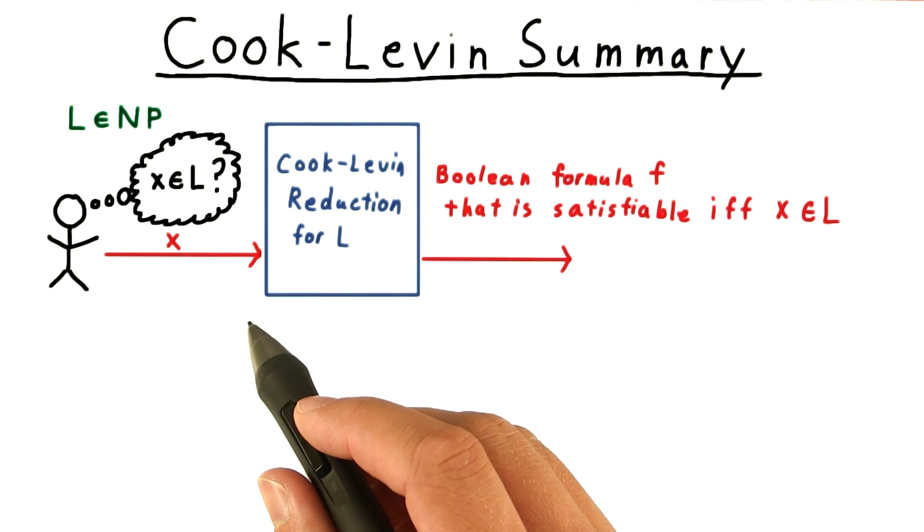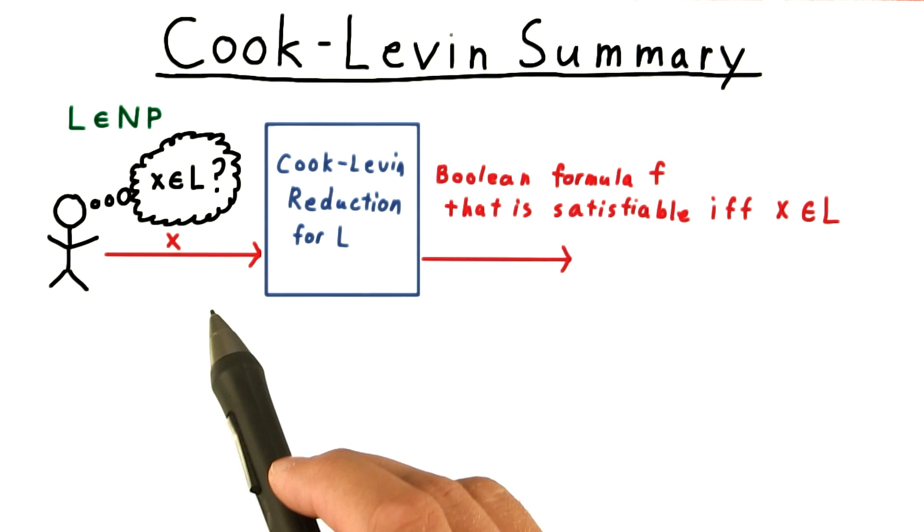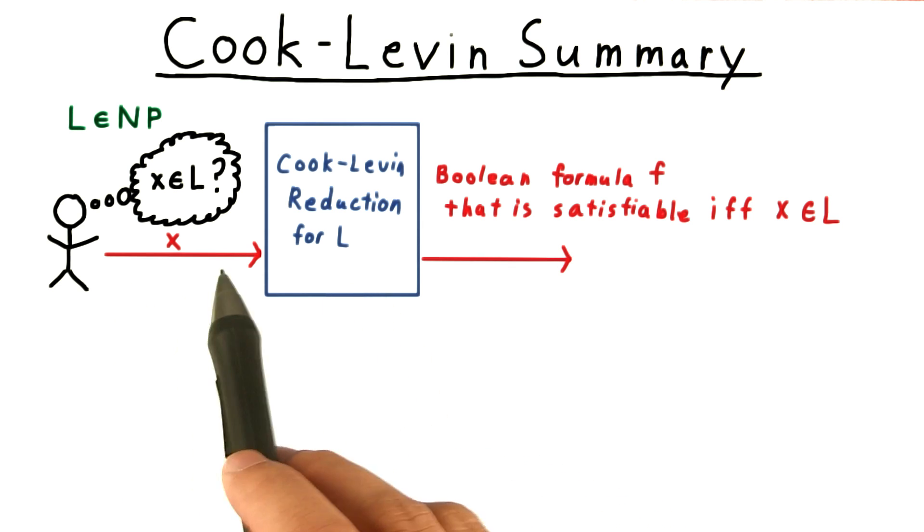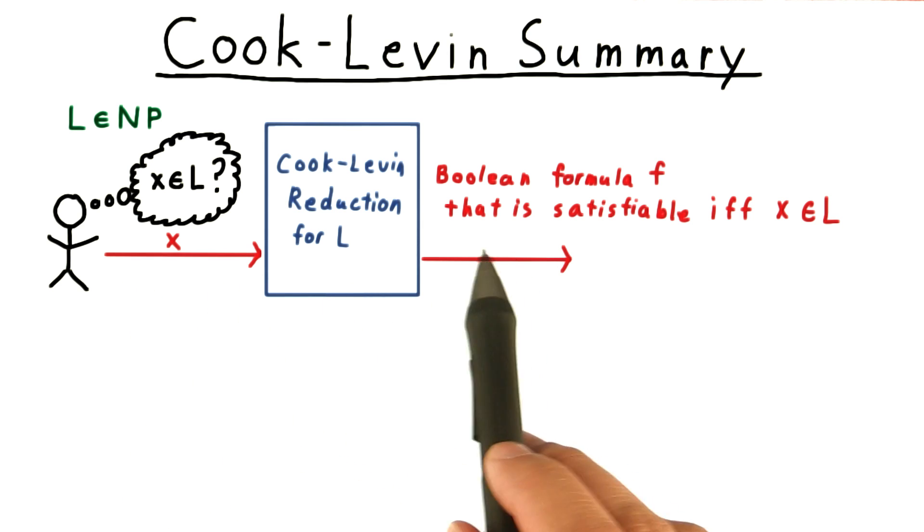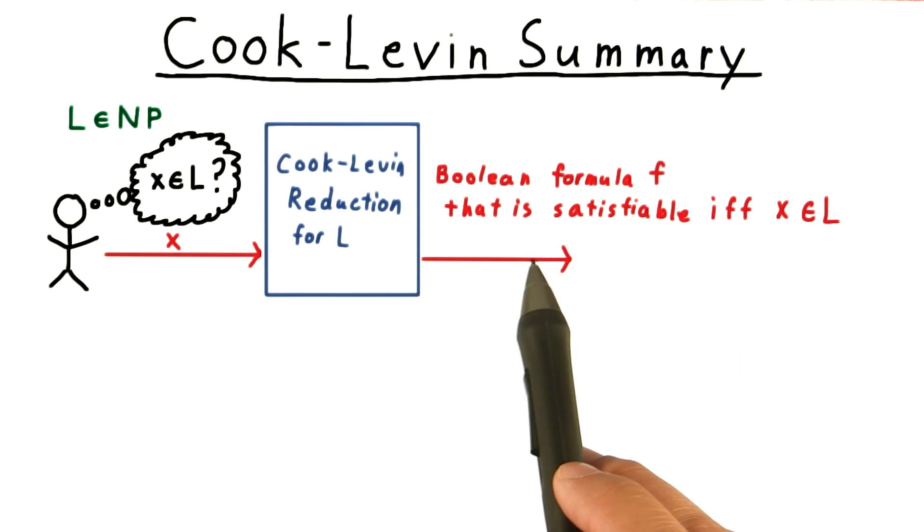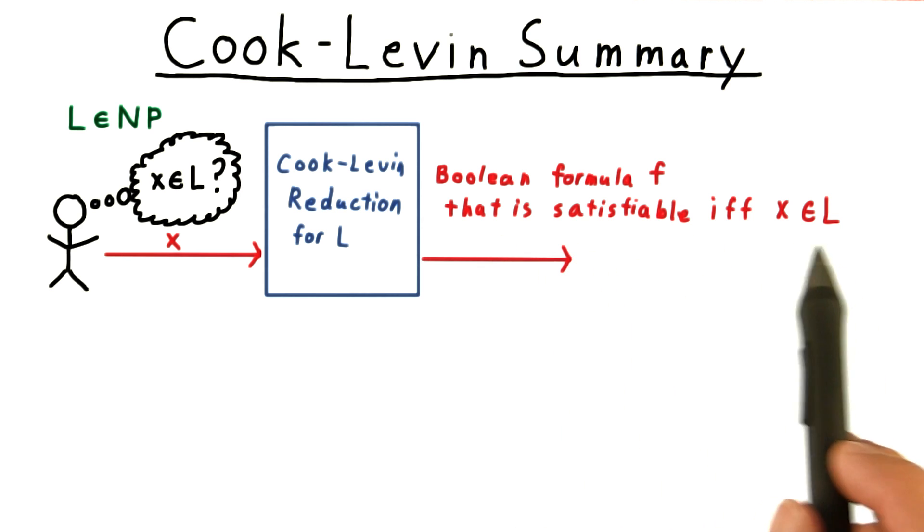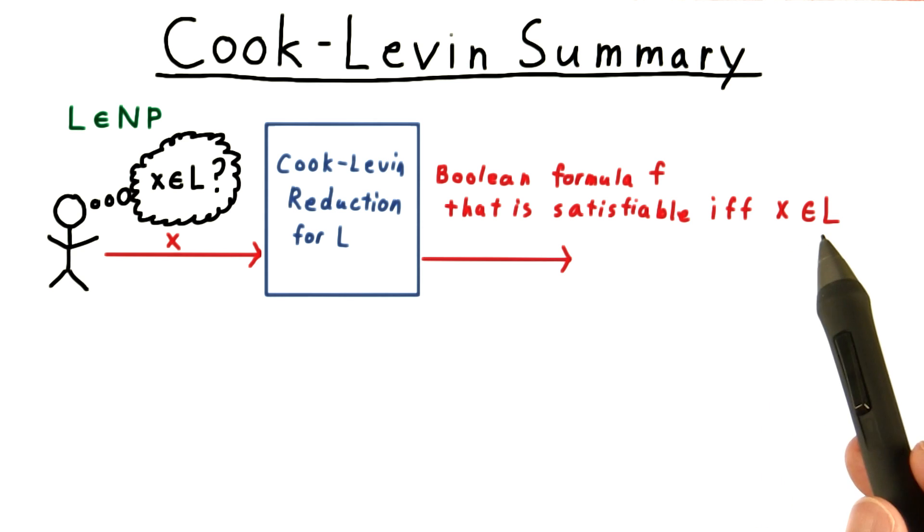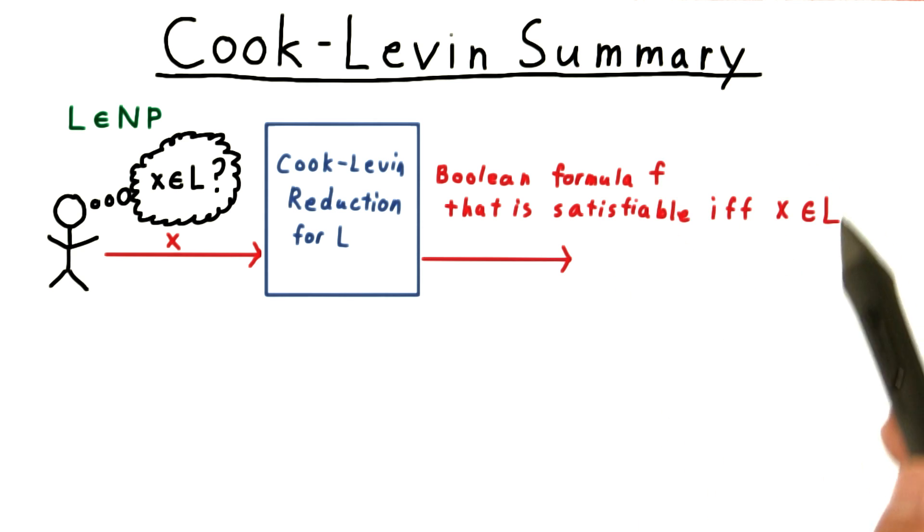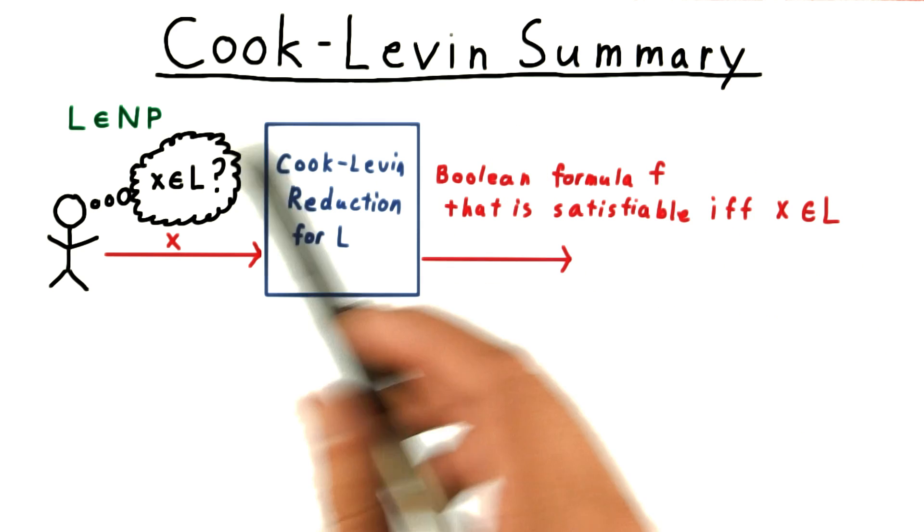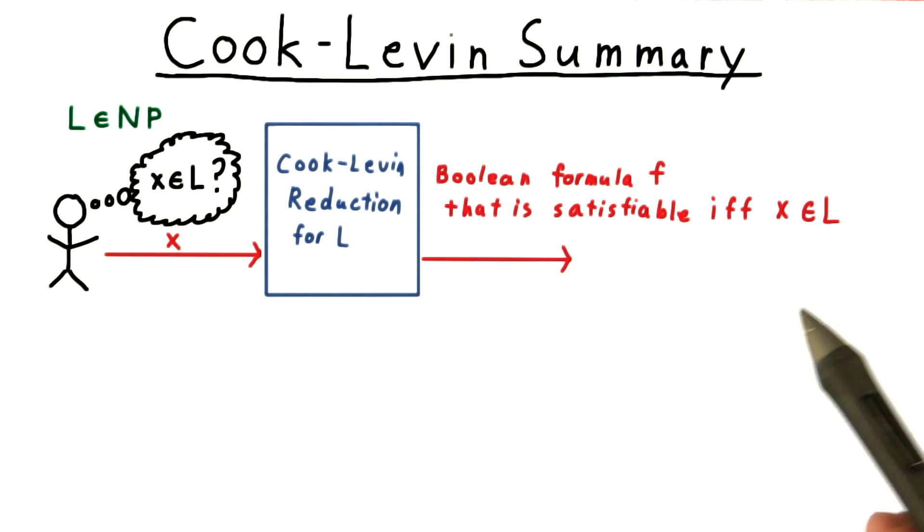And it uses this fact to create a function, computable in polynomial time, that takes in any input string x and outputs a boolean formula that is satisfiable if and only if the string x is in the language L. That way, any polynomial algorithm for deciding satisfiability would be able to decide every language in NP in polynomial time.